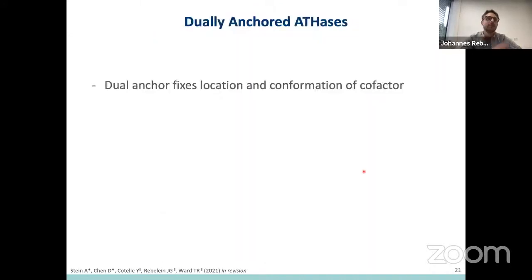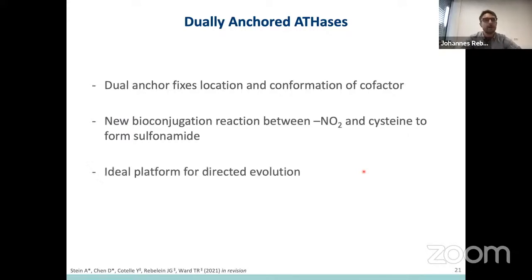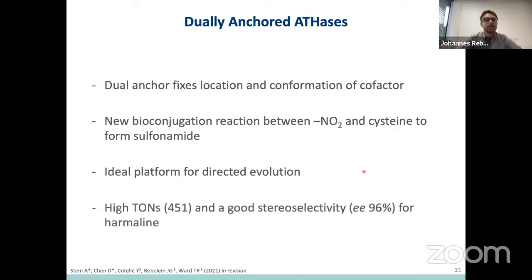As a last step, we purified all the best identified mutants and performed a substrate screen with them. Although all these mutants were not evolved for the shown substrates, we observed quite an increase and still very good activities — for example, complete turnover and different stereoselectivities. We think these dually anchored artificial metalloenzymes are a great starting point for further evolutionary campaigns. To summarize: we used the dual anchor to fix the location and conformation of our cofactor, which has a beneficial impact on catalysis and stereoselectivity. We also discovered a new bioconjugation reaction where the nitro group reacts with cysteine to form a sulfonamide, and we think this is a great platform for further directed evolution approaches to evolve these enzymes toward new substrates. We observed high turnovers and good stereoselectivity for harmaline, the substrate we evolved on.